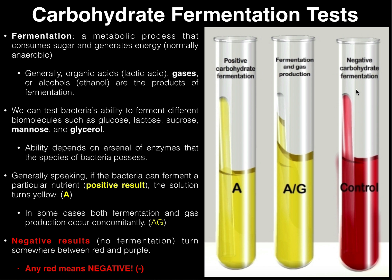So there are really three possible results: any red whatsoever means automatically negative; all yellow with no gas in the Durham tube tip means A (acidic); and all yellow with a gas bubble at the tip of the Durham tube means AG. In our mannose example: all yellow with no gas means that bacteria ferments mannose (A); all yellow with gas means it ferments mannose and produces gas (AG); and all red means it does not ferment mannose at all. The test is straightforward — just memorize the three results: A, AG, and negative.